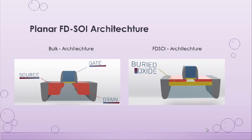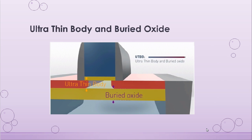The FDSOI architecture is in fact very similar to the bulk architecture, which consists of the source, the gate, and the drain etched onto a P-type substrate in the case of an NMOSFET. The only difference between the bulk architecture and the FDSOI architecture is the presence of an extra buried oxide layer on which the source, the gate, and the drain are etched onto. The FDSOI device is also referred to as the ultra-thin body and buried oxide device, or UTBB. Looking at a zoomed-in view, it consists of an ultra-thin body etched onto an already thin buried oxide layer, hence giving rise to the name UTBB.